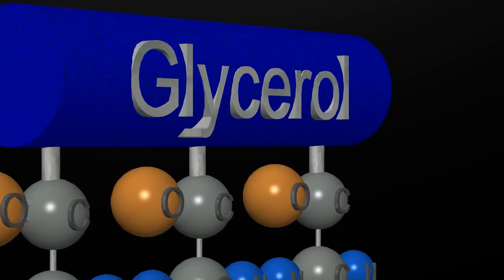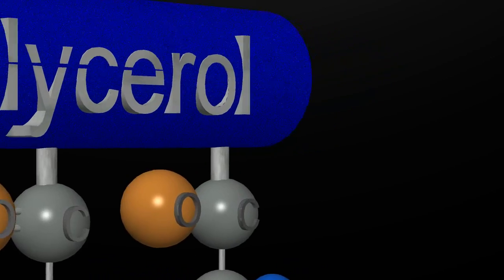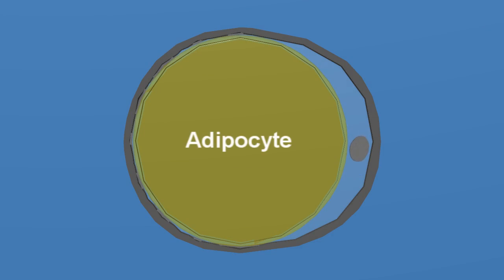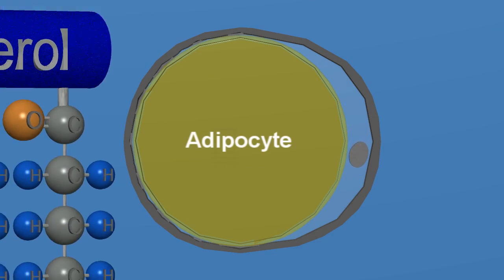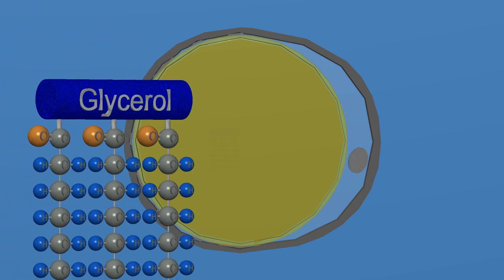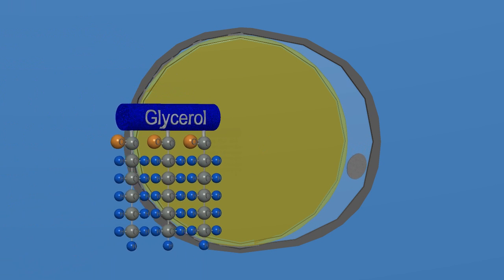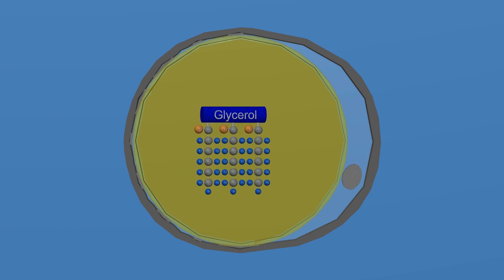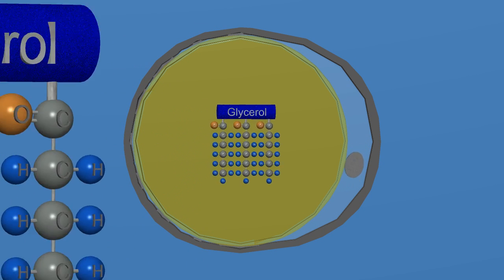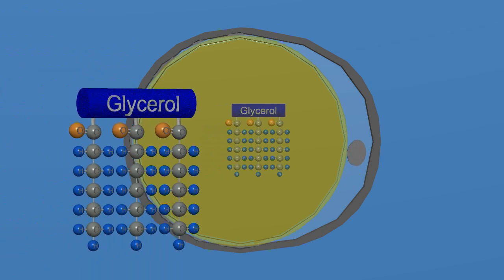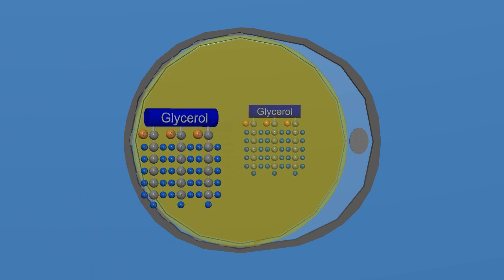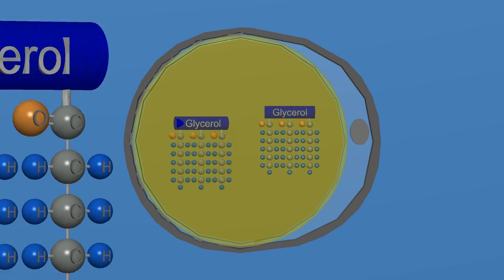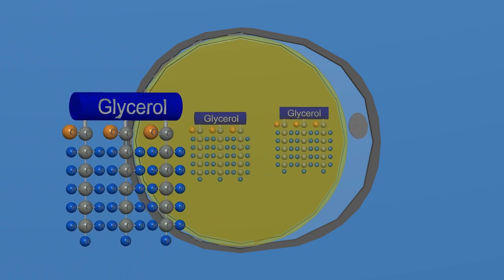In animals, those triglycerides are stored in specialized cells called adipocytes, part of adipose tissue. The adipocyte is designed to take in these triglycerides and store these fatty molecules inside of the cytoplasm.